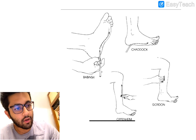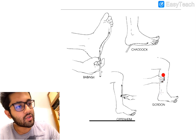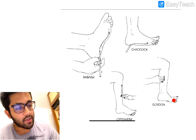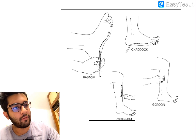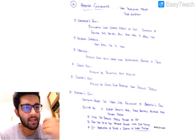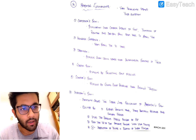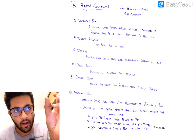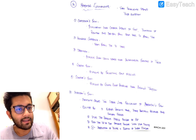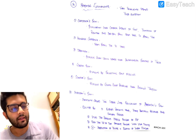The Gordon sign: simply squeeze the calf muscles hard and you see a Babinski positive. The Schaefer sign is very similar to the Gordon sign but instead of pressing the calf muscles, you squeeze the Achilles tendon.